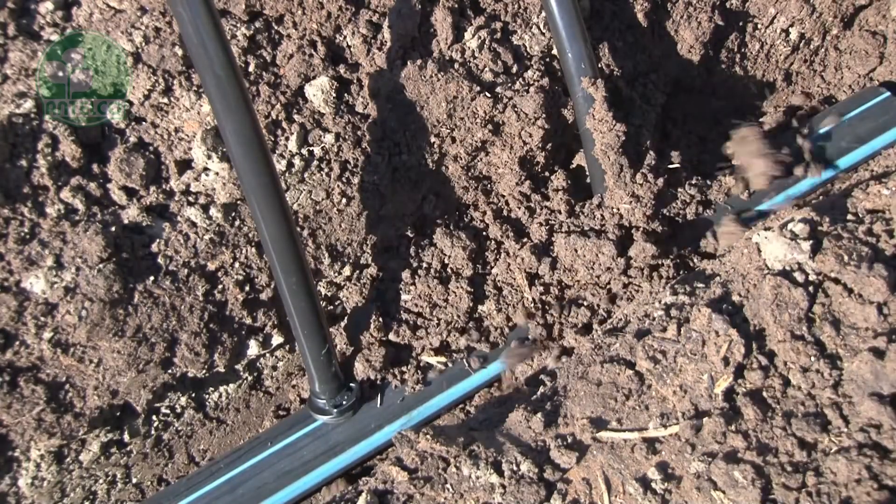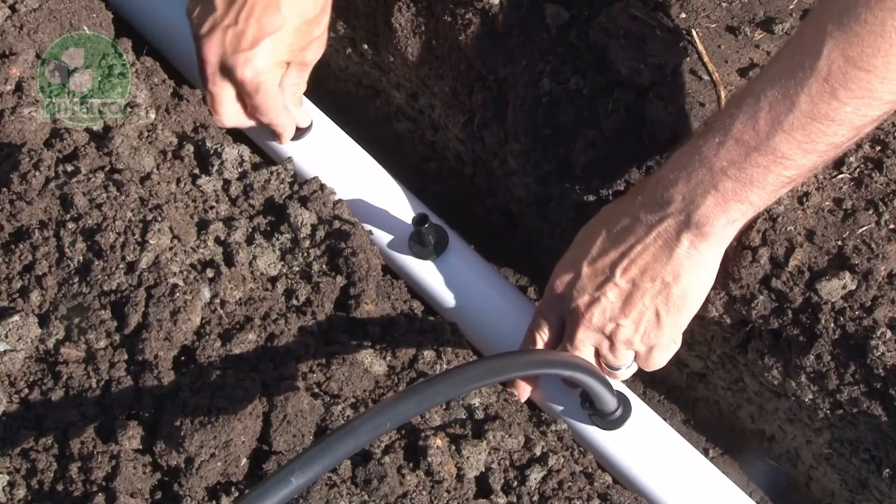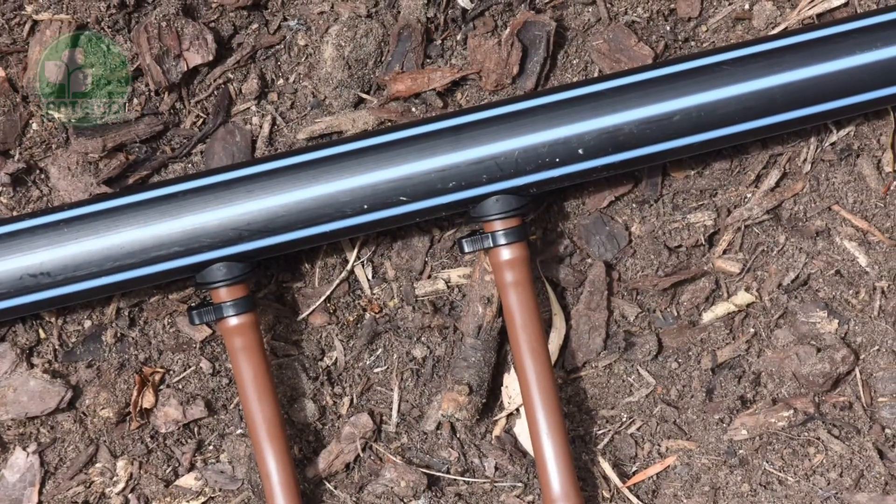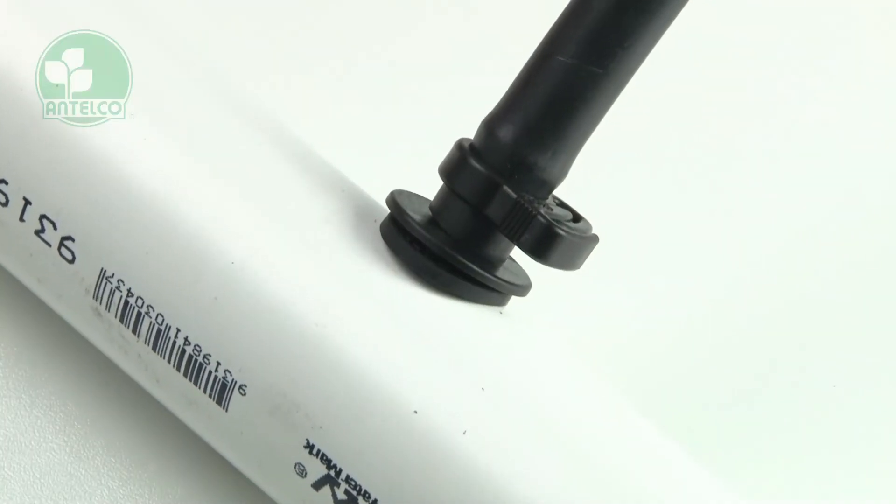The Entelco Xpando takeoff system provides a fast and easy method of attaching laterals to PVC mainlines, either in new installations or as a retrofit.